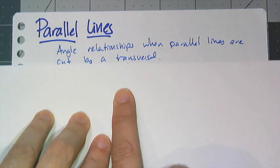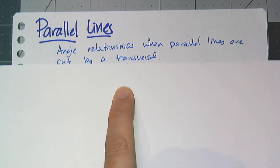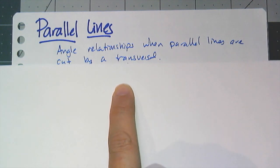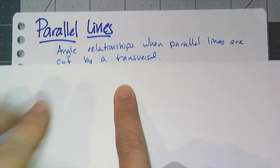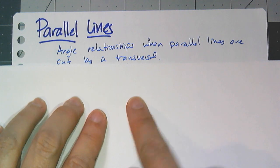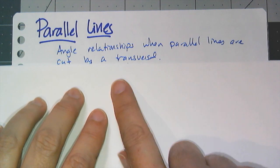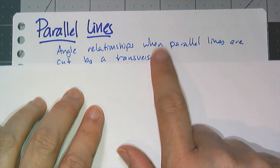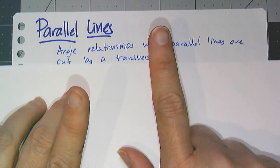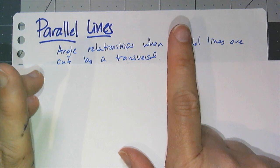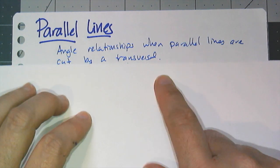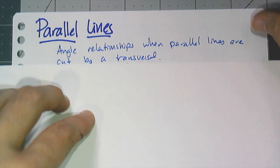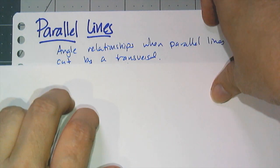In this video, we're going to look at parallel lines and some angle relationships that are formed when parallel lines are cut by a transversal. Before we start talking about the angle relationships, we have some new vocabulary we have to deal with.